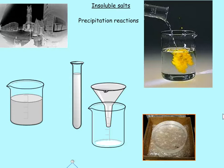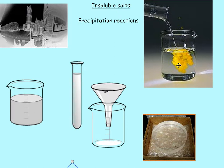Insoluble salts don't dissolve — they're insoluble, so they remain solid. Here's one being formed: a clear solution is being poured into another clear solution, and as the two react they form this solid yellow stuff called a precipitate. When you form insoluble salts it's called a precipitation reaction, because you form a solid from two liquids.